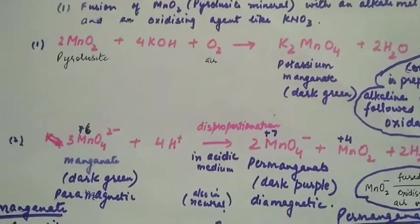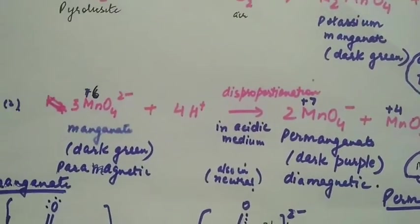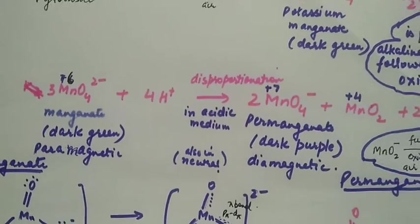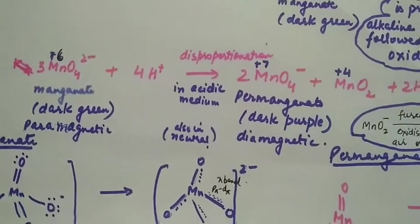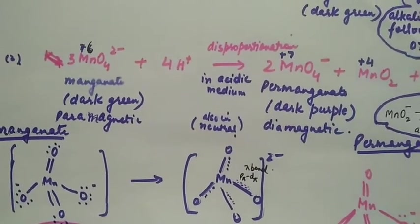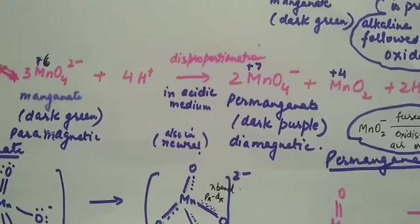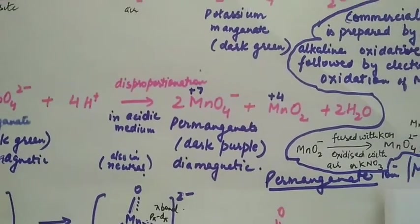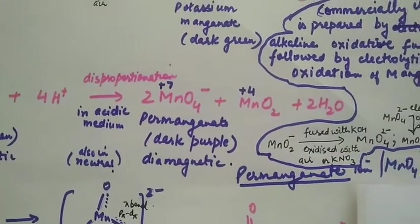This green colored mass is dissolved in water, and then this solution can be oxidized with an oxidizing agent like chlorine, ozone, or carbon dioxide. Or it can be converted to potassium permanganate with acidic solution.